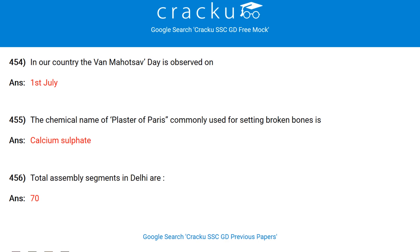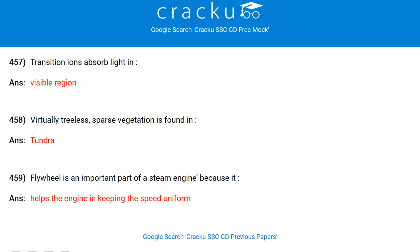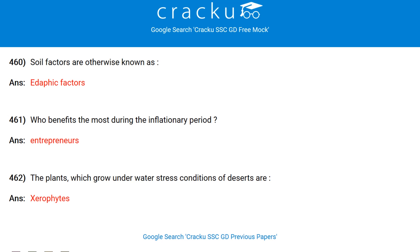Who had been selected for the Tagore Award for Cultural Harmony in 2013? Zubin Mehta. Which river serves the largest cultivable area? Ganga. The process through which plants reproduce is called pollination. The Hutti gold mines are located in the state of Karnataka. The apparatus used to test acidity of aqueous solution is a pH meter. Medicine of quinine is provided by the cinchona plant. In our country, Van Mahotsav Day is observed on 1st July.